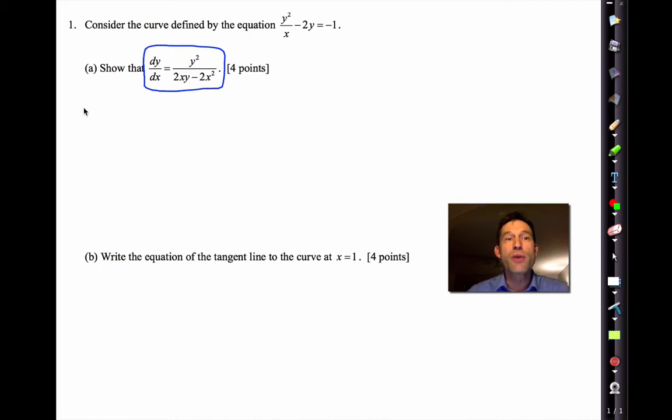This is a classic implicit derivative. Now unlike an explicit derivative, we always start implicit derivatives by taking the derivative of both sides of the equation. This isn't calculus, this is just fundamentally the way that algebra works. Whatever we do to one expression, we do to the other expression. So I'm going to take the derivative with respect to x on both sides of this equation.